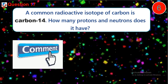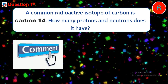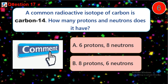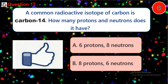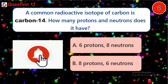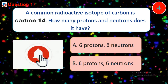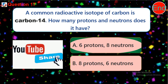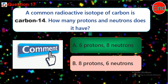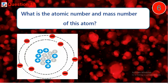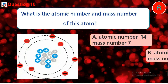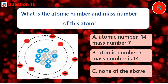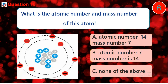Question 17: A common radioactive isotope of carbon is carbon-14. How many protons and neutrons does it have? A) 6 protons, 8 neutrons, B) 8 protons, 6 neutrons. Question 18: What is the atomic number and mass number of this atom? A) Atomic number 14, mass number 7. B) Atomic number 7, mass number 14. C) None of the above.